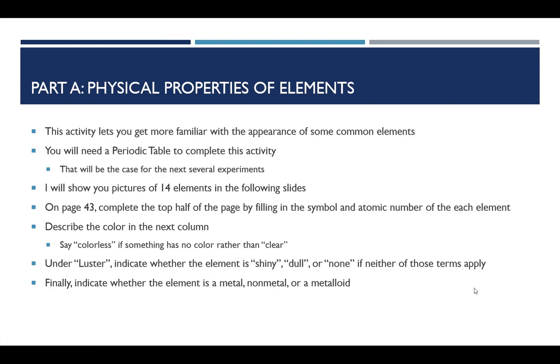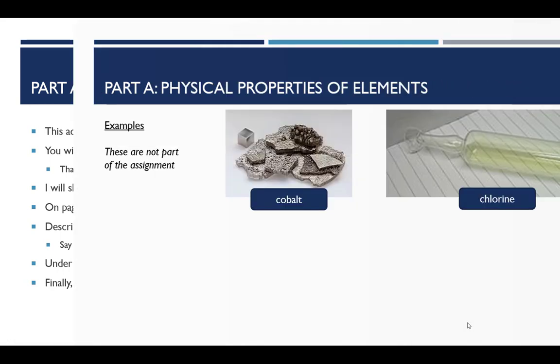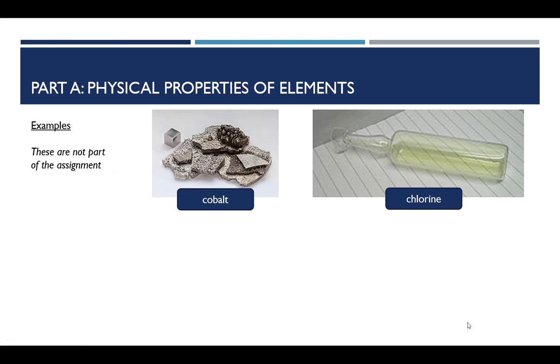And finally, you want to indicate whether the element that you're observing is a metal, a nonmetal, or a metalloid. You'll recall that in the periodic table, you have a thick stair step line running down the right side. The elements to the right of that stair step line are primarily nonmetals. The elements to the left are primarily metals, with the exception of hydrogen, which of course is a nonmetal. And then the elements on either side of that line are metalloids, except for aluminum, which is a metal.